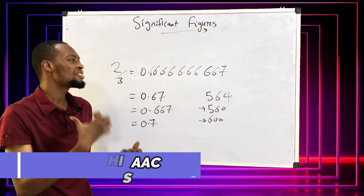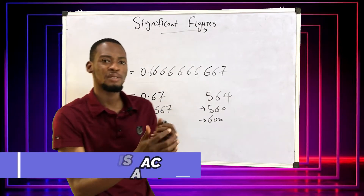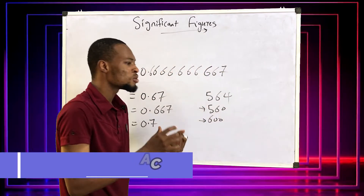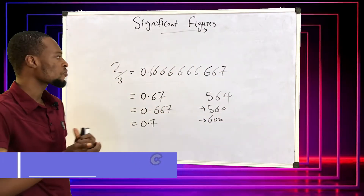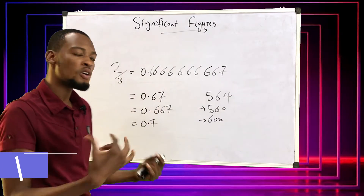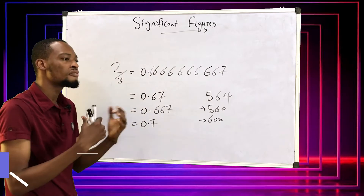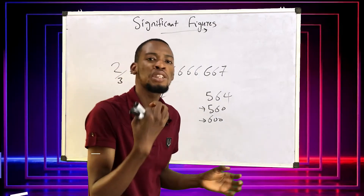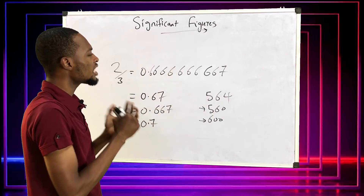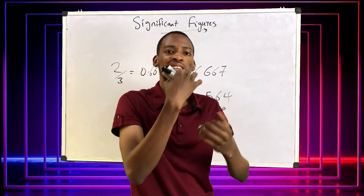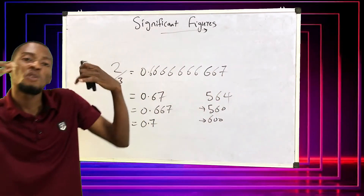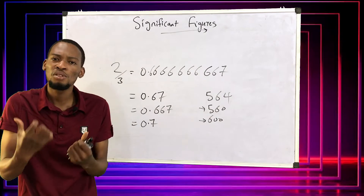Whether it is correct or wrong depends on the significant figures we want. So if I give you a question and I say solve it to one significant figure, or two significant figures, or give me the answer in three significant figures — that's what it means, how you break this down. In significant figures, you have your first, second, third significant figure, and so on, depending on the values you are given.